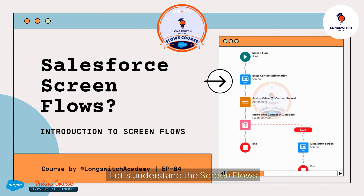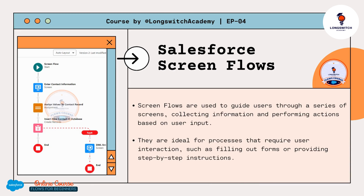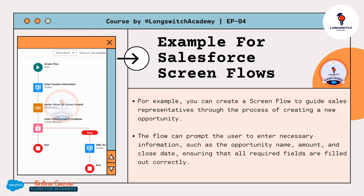Screen Flows are used to guide users through a series of screens, collecting information and performing actions based on user input. They are ideal for processes that require user interaction, such as filling out forms or providing step-by-step instructions. For example, you can create a Screen Flow to guide sales representatives through the process of creating a new opportunity.